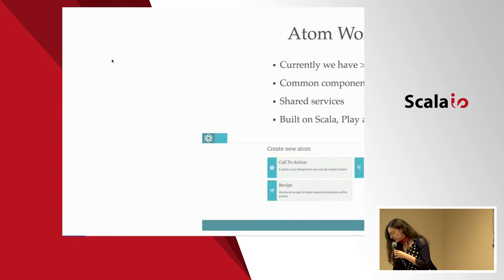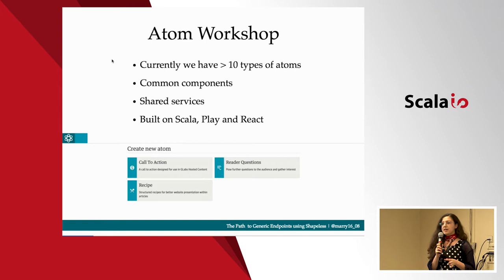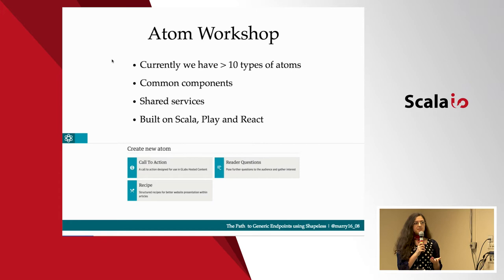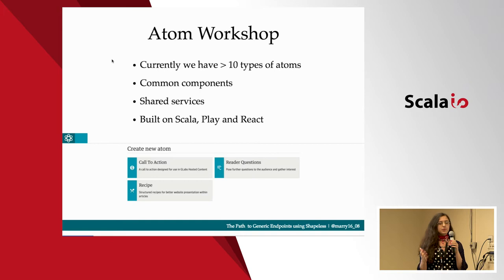We currently have around 10 types of atoms and we are constantly being asked to support more types. But building a new tool every time an atom is born is not sustainable. It takes the team around two months to build a new tool for an atom. We started to see the similarities — they're all built on Scala, Play Framework and React, and they all use the same services and the same features. So at the beginning of this year, we decided to build a tool that will become the home of all the atoms.